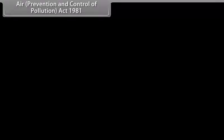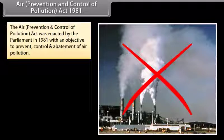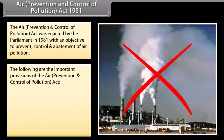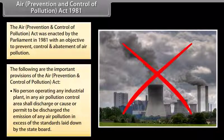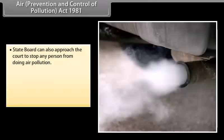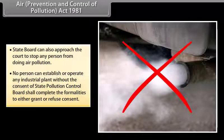Air Prevention and Control of Pollution Act 1981. The Air Prevention and Control of Pollution Act was enacted by the Parliament in 1981 with an objective to prevent, control and abatement of air pollution. No person operating any industrial plant in any air pollution control area shall discharge or permit the emission of any air pollutant in excess of standards laid down by the State Board. The State Board can also approach the court to stop any person from causing air pollution. No person can establish or operate any industrial plant without the consent of the State Pollution Control Board.